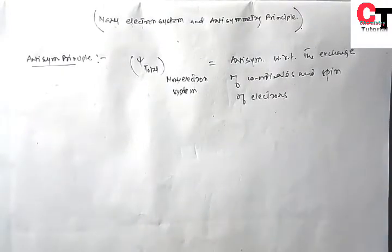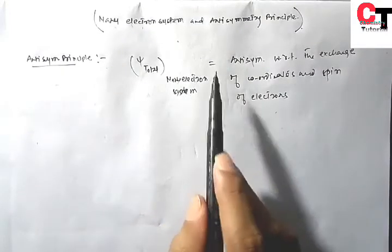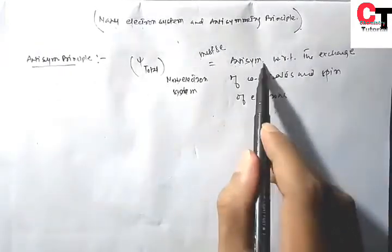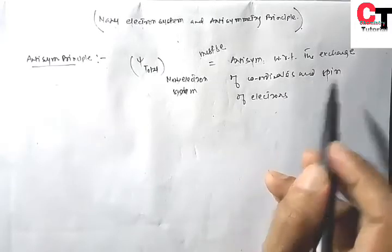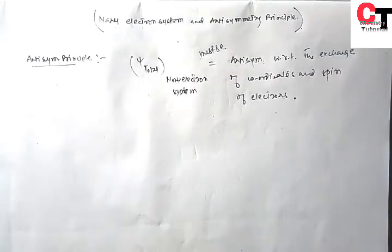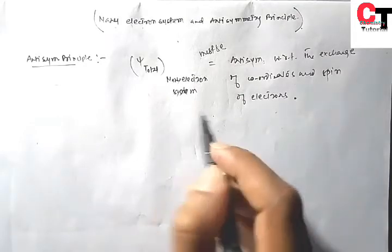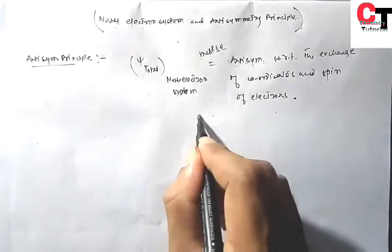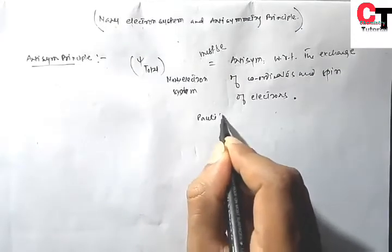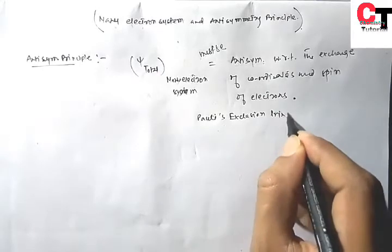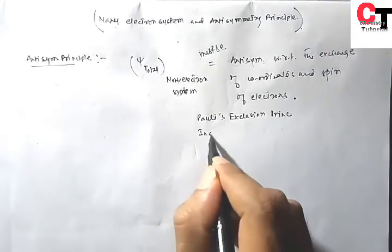That is, the total wave function of a Many Electron System must be antisymmetric with respect to the exchange of coordinates and spins of electrons. This principle applies to any Many Electron System — it may be a molecular system or an atomic system. This principle is also known as Pauli's Exclusion Principle or the Indistinguishability Principle.